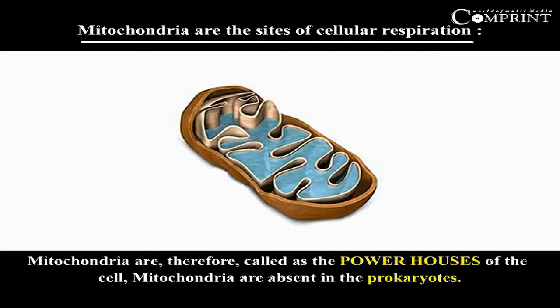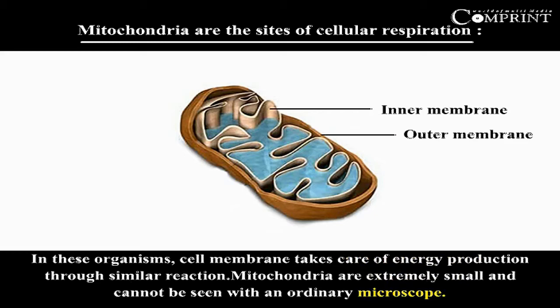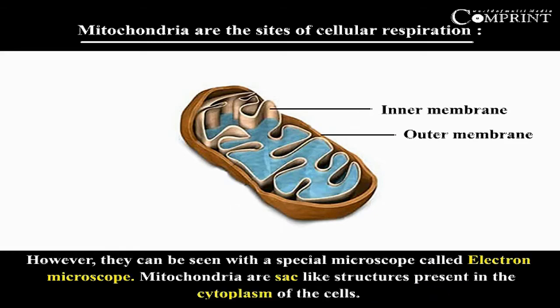Mitochondria are absent in prokaryotes. In these organisms, cell membranes take care of energy production through similar reactions. Mitochondria are extremely small and cannot be seen with an ordinary microscope; however, they can be seen with a special microscope called an electron microscope.